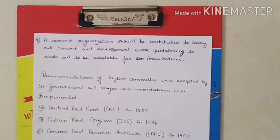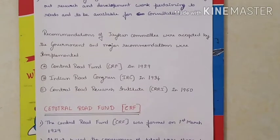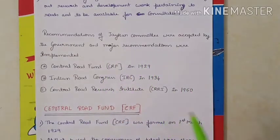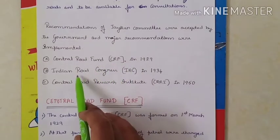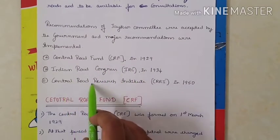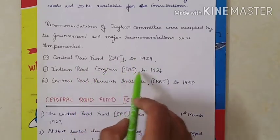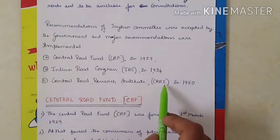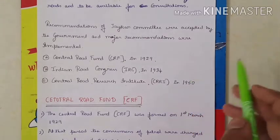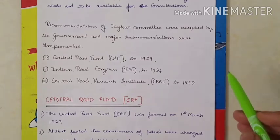These are the four recommendations made by the JAKA committee. The recommendations were accepted by the government and the three major recommendations implemented were: the Central Road Fund (CRF) in 1929, Indian Roads Congress (IRC) in 1934, and Central Road Research Institute (CRRI) in 1950.